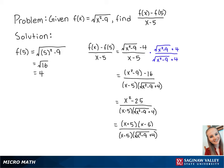Now that we have an x minus 5 on the top and the bottom, we can cancel both of these out so that we are left with x plus 5 over the square root of x squared minus 9 plus 4.